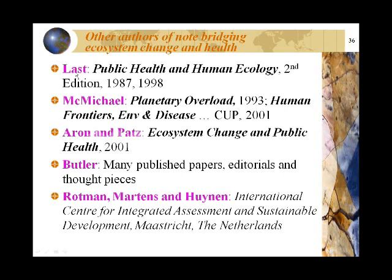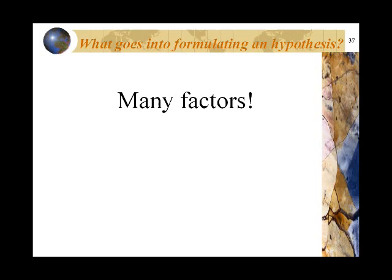Other authors bridging ecosystem change and health include John Last's Public Health and Human Ecology (first edition 1987), Tony McMichael's Planetary Overload (1993), Aaron and Patz's Ecosystem Change in Public Health, Butler, Rotman, and Martens from the University of Maastricht in the Netherlands. All of these people have been real pioneers in thinking about global issues and how public health and epidemiology might help formulate hypotheses to inform policy.